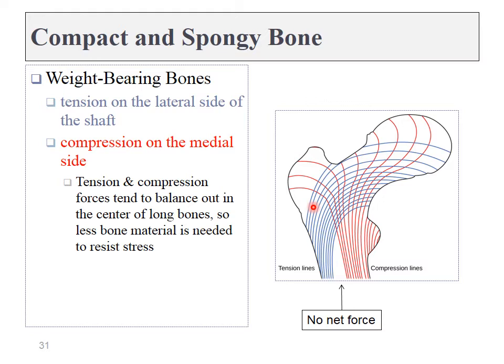How bones know they can do this will be addressed later. For now, understand that long bones are hollow, which reduces their weight without reducing any of the strength. This also tells us about bone tissue formation: compact bone is at the outer edges where the most force is applied, spongy bone is more towards the middle, and in some places no bone tissue is needed at all.